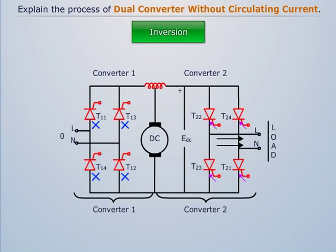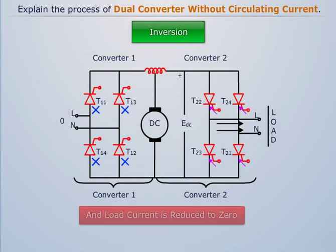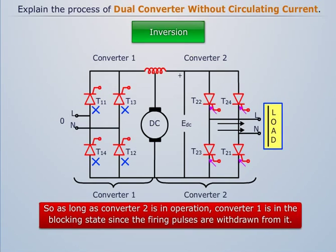For the inversion operation, converter 1 is first blocked by removing its firing pulses and load current is reduced to zero. And converter 2 is made to conduct by applying the firing pulses to it. The current in converter 2 would now build up through the load in the reverse direction. So as long as converter 2 is in operation, converter 1 is in the blocking state since the firing pulses are withdrawn from it.